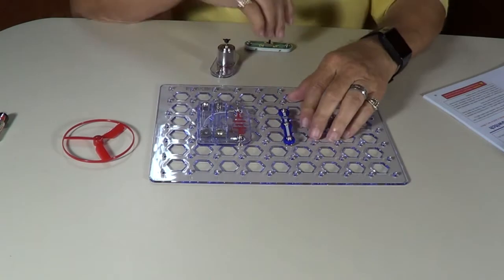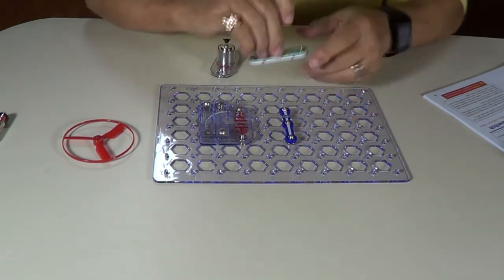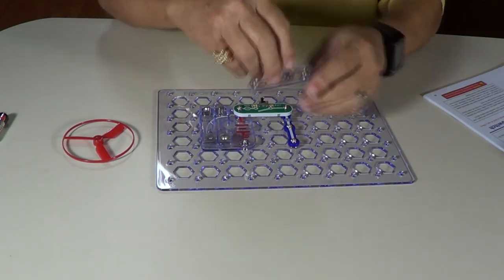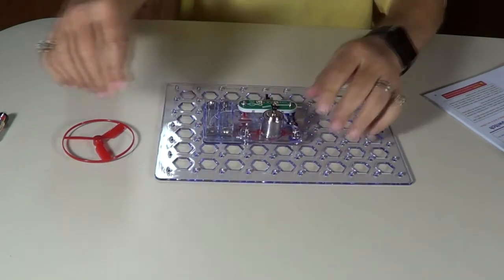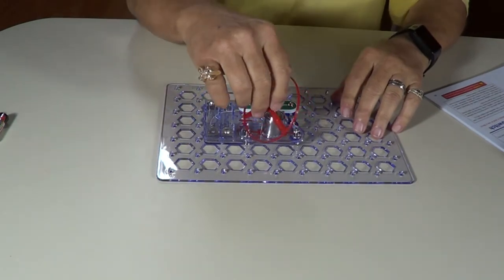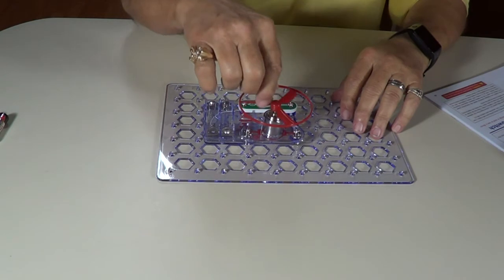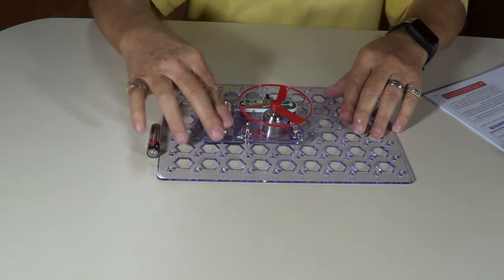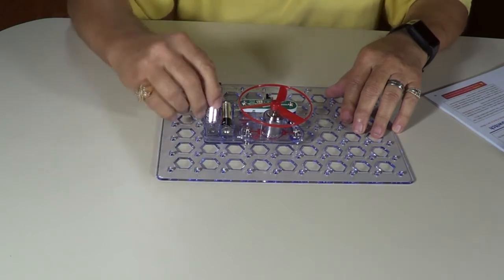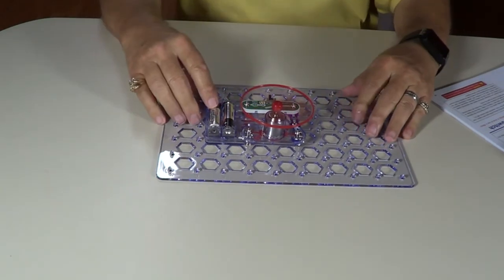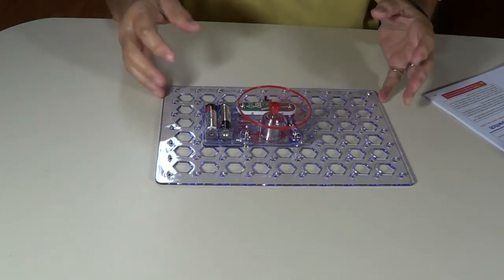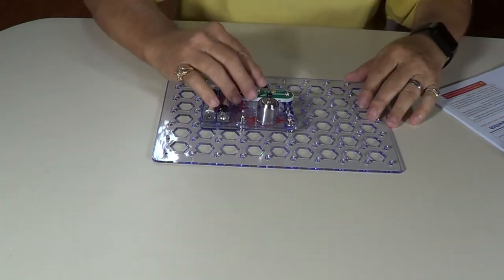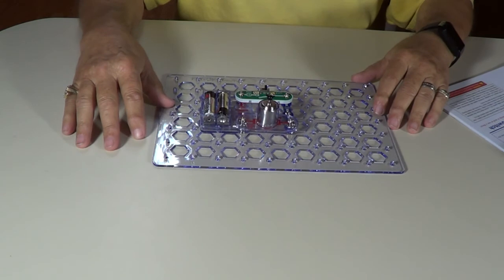Then your switch S1 goes in right there on top. The motor M1 goes in right there on top. Your propeller goes on right there. Your batteries go in right there. There it goes. Whoa! Took off, didn't it? We can turn it off now. There is project number two.